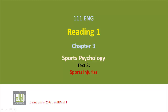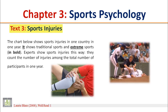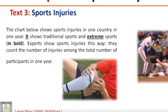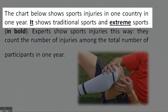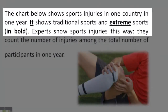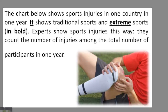English 111, Reading 1. Chapter 3, Sports Psychology, Text 3: Sports Injuries. The chart below shows sports injuries in one country in one year. It shows traditional sports and extreme sports in bold. Experts show sports injuries in this way — they count the number of injuries among the total number of participants in one year.